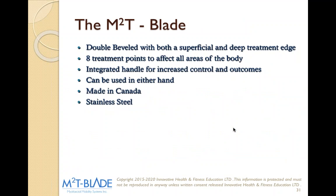A little bit about the M2T Blade — if you haven't seen it, go to m2tblade.com. The M2T Blade is a double bevel with both a superficial and deep treatment edge: one side has a 35-degree cut (the superficial edge) and the other has a 55-degree cut (the deep edge). You can treat superficially or deeply with the same pressure depending on which side you use. We have eight treatment points to affect all areas of the body — it's an all-in-one treatment tool.